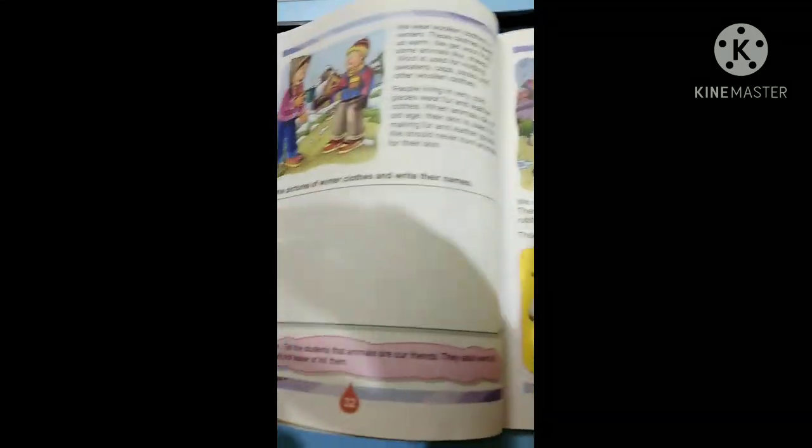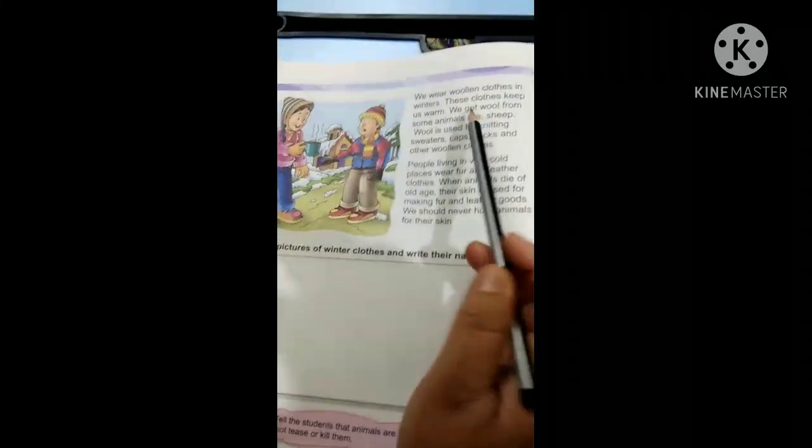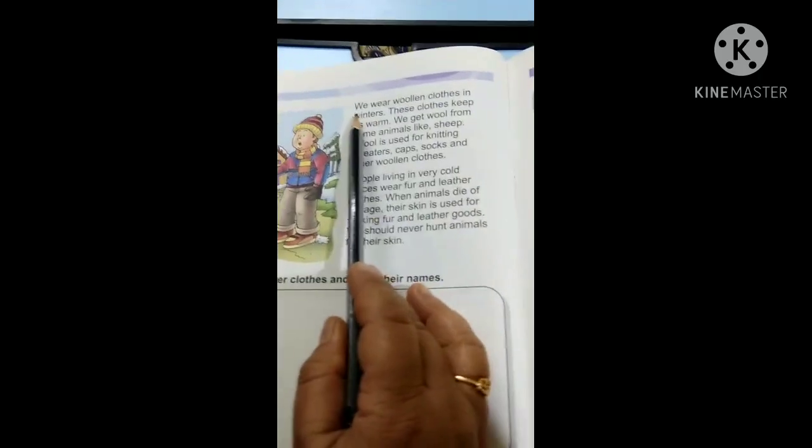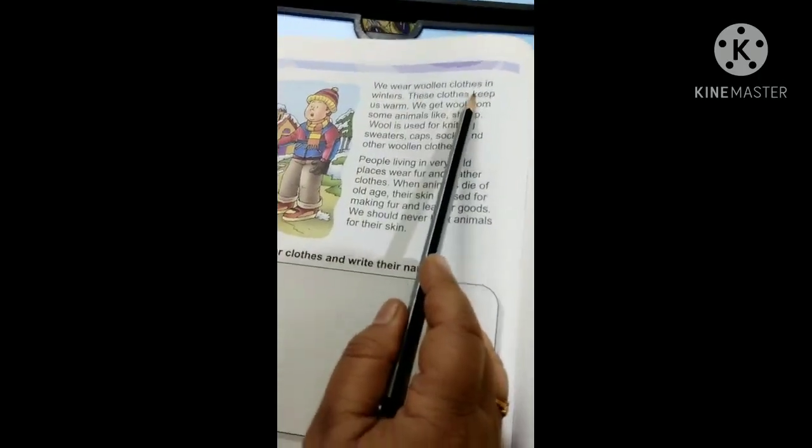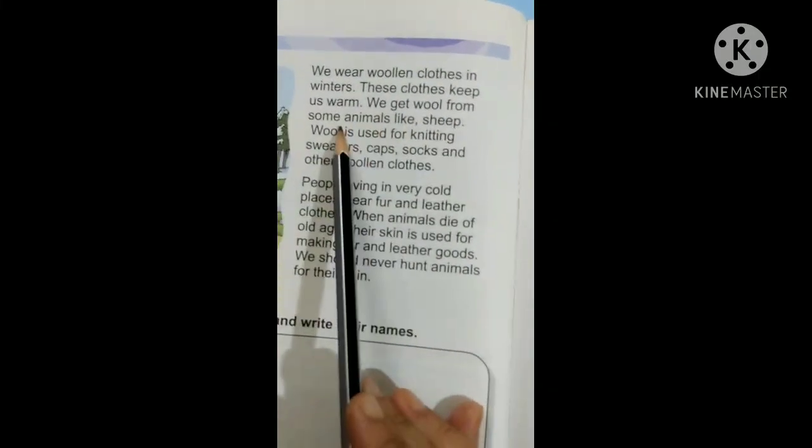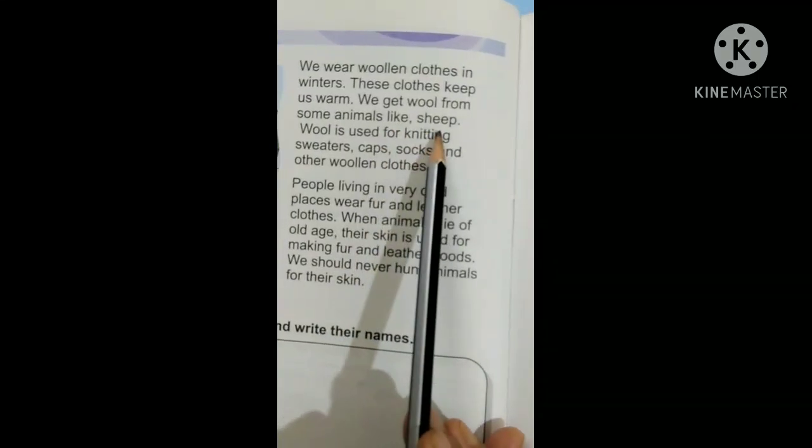Now, come to page number 32. Let us read it. It's about winter season. You can see the picture. So, we wear woolen clothes in winters. These clothes keep us warm. We get wool from some animals like sheep.